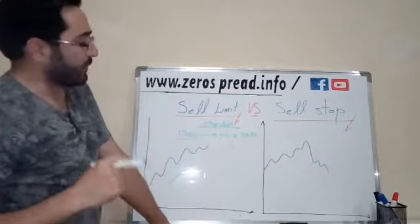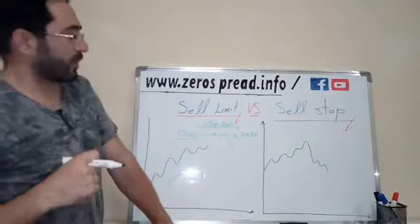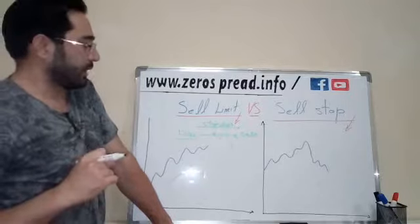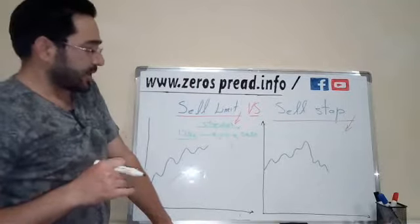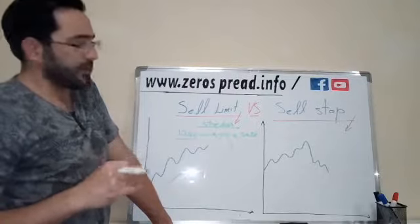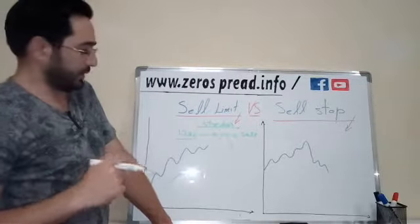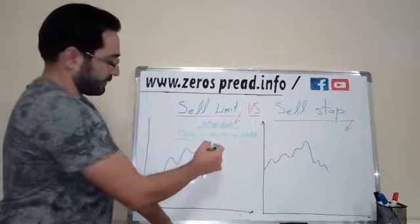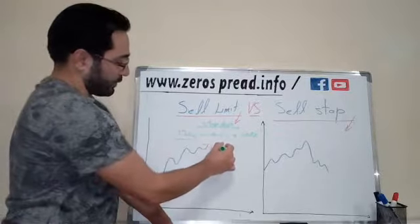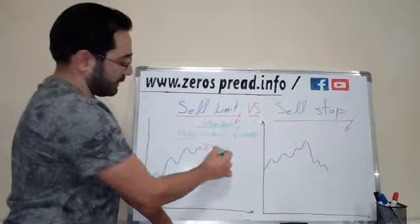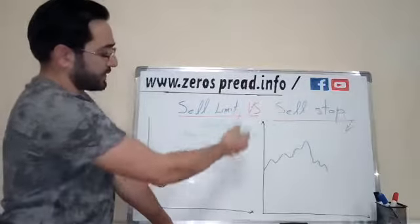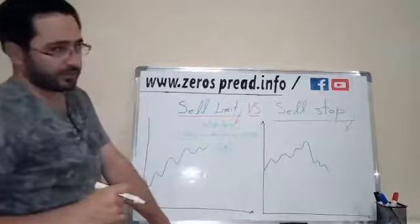So the sell limit is used when you want to sell something — whatever symbol — at a price which is more than the current market price. For example, the current price is 1290 and you want to sell at 1300. Here you set the sell limit order.